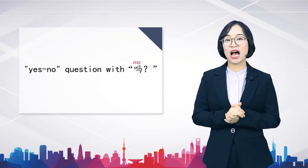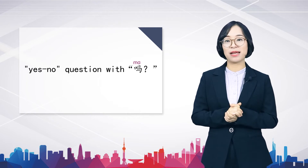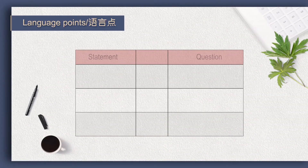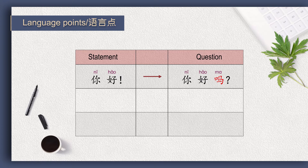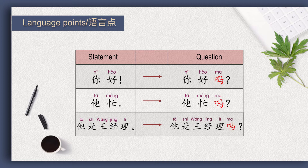吗 is used after a sentence to indicate the interactive mood. When 吗 is added to the end of a declarative statement, that statement is turned into a question. For example, 你好 becomes 你好吗? The meaning changes from hello to how are you. The interactive form of 她忙 is 她忙吗? Another example: 她是王经理 becomes 她是王经理吗?